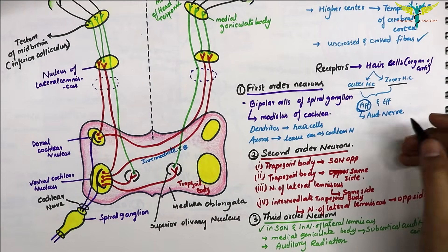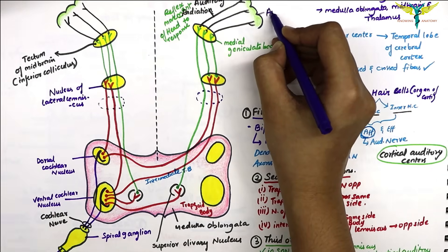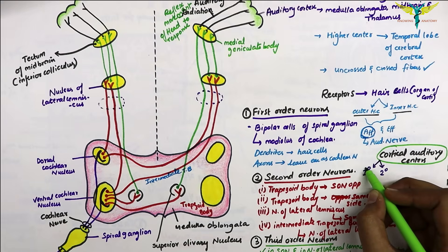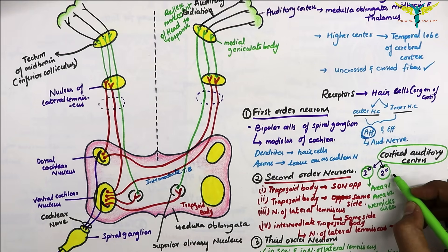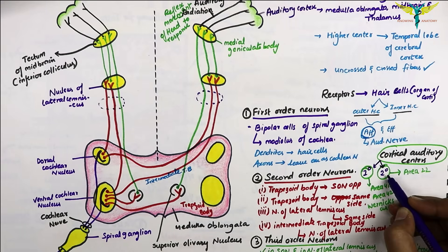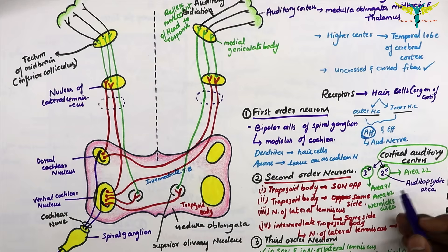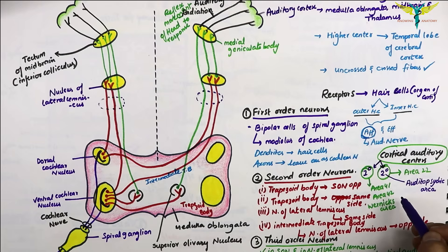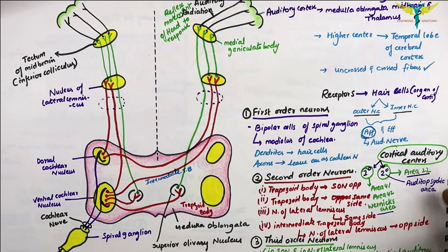The cortical auditory centers are present in the temporal lobe of the cerebral cortex. The auditory areas include the primary auditory area and the secondary auditory area. The primary auditory area includes area 41, area 42, and Wernicke's area. The secondary auditory area includes area 22, also called the auditory psychic area. Areas 41 and 42 are situated in the anterior transverse gyrus and lateral surface of the superior temporal gyrus. Wernicke's area is in the upper part of the superior temporal gyrus, posterior to areas 41 and 42. Area 22 occupies the superior temporal gyrus.